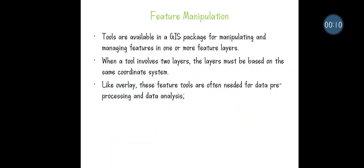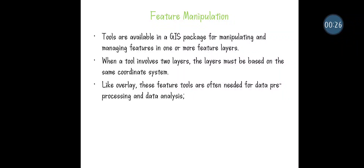Feature manipulation means you are going to edit or update something. It may be you are going to add up something, or it may be you will be removing something from the original data. So in feature manipulation, in the available feature data, you can be adding some other features, or you may be removing the unwanted feature from the existing data. This is what you are going to do with a feature manipulation tool in geospatial data.